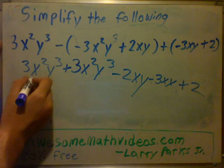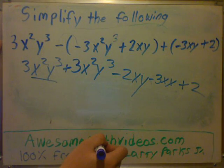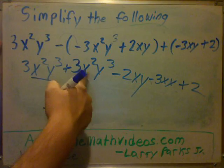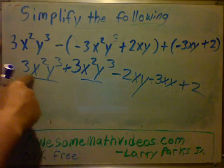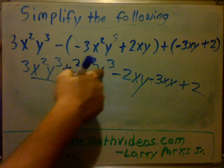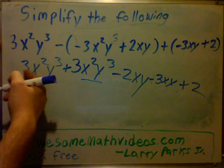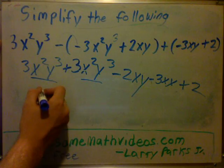Now look here, I have an x²y³. Do we have any other x²y³? There's one. Anywhere else? No. So what's 3x²y³ plus 3x²y³? Well, you have three of these, and three of these would be six of those.